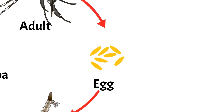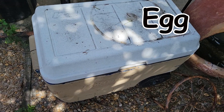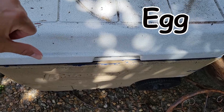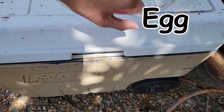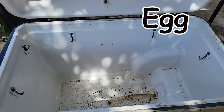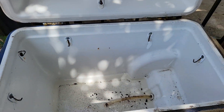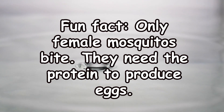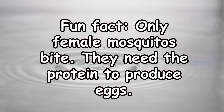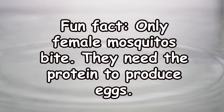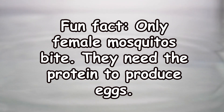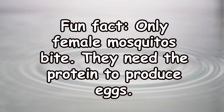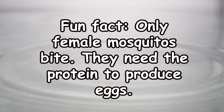Stage one: egg. Adult female mosquitoes will lay their eggs on the inside of containers with water. Did you know only female mosquitoes bite? They need the protein to produce eggs, so if a mosquito bites you, it's a girl.